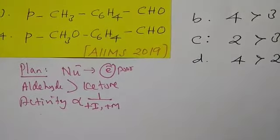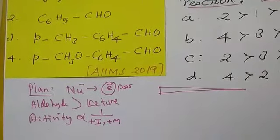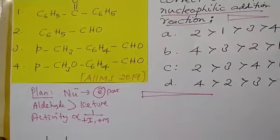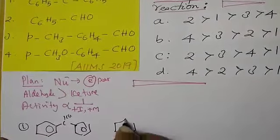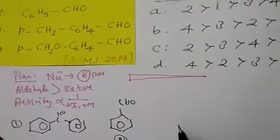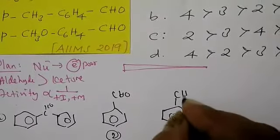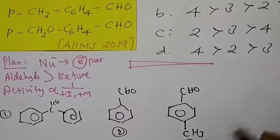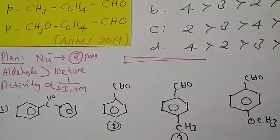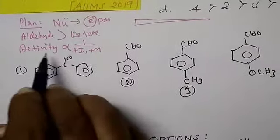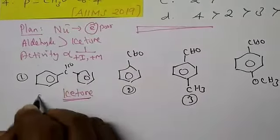Now let us go and see the structures, then we will go for the arrangement. The first structure is diphenyl ketone — that is number 1. Number 2 is benzaldehyde. Number 3: para-substituted benzaldehyde with a methyl group at the para position. And the fourth compound has a methoxy group at the para position. Since number 1 is exclusively a ketone, it should be the least reactive, so it is the least.